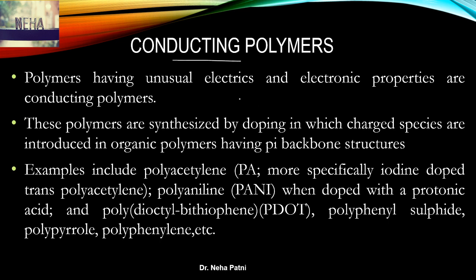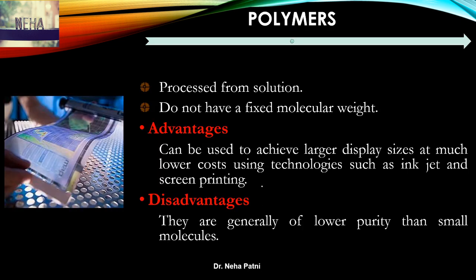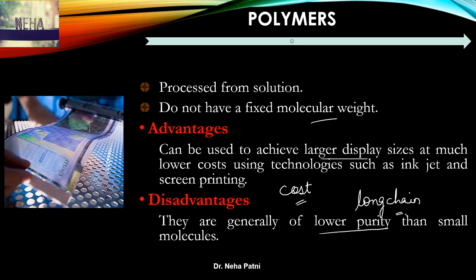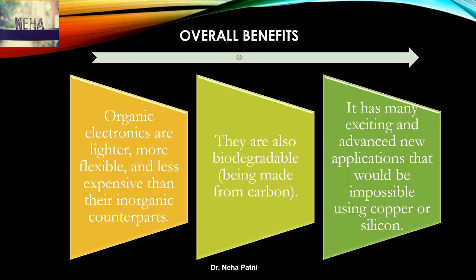So polymer — specifically conducting polymer — came into existence. Conducting polymers conduct electricity; these molecules have alternating single and double bonds, which makes conduction easy. Examples include polyacetylene, polyaniline, polyphenylene, and polypyrrole. In fact, I did my PhD in polyaniline and made an organic solar cell. Polymers are processed from solution and do not have a fixed molecular weight, unlike small molecules. Their advantage is that they can achieve larger display sizes at very low cost, though the disadvantage is generally lower purity due to their long chain structure.